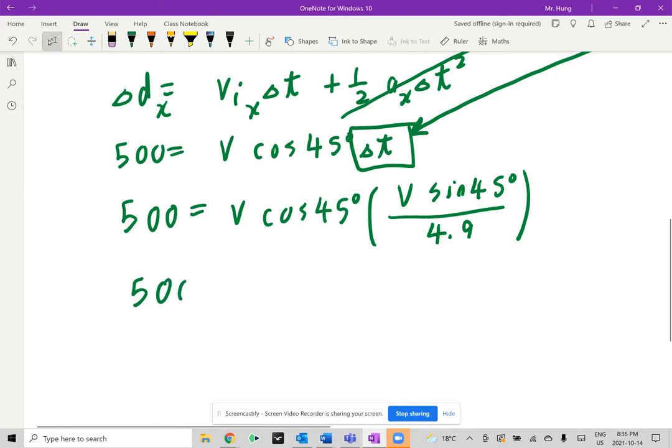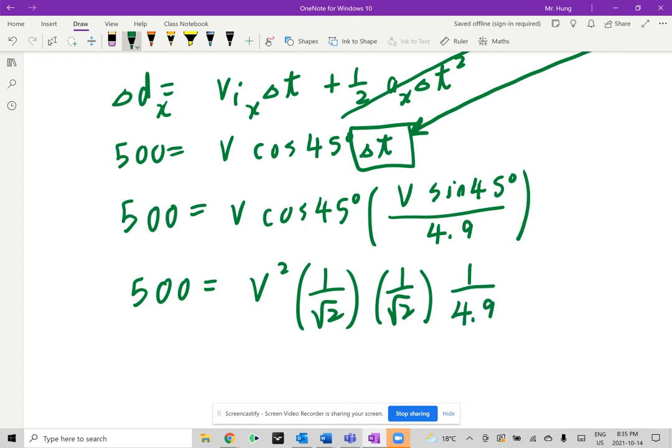You can do this mentally. I mean, you could use a calculator. I'm not going to stop you from doing that. But if you use a little bit of mental math, look at this. V times V is going to be V squared. Now, cosine of 45 degrees, by the way, is exactly 1 over root 2. And sine of 45 degrees is also exactly 1 over root 2. And I'll just leave it as 1 divided by 4.9 like that. Now, root 2 times root 2 is going to be 2. And if you cross multiply, 2 times 500 is exactly 1,000. And of course, you can also take 4.9 and bring it to the other side. So 4.9 times 1,000 is going to be 49,000, which equals to V squared.